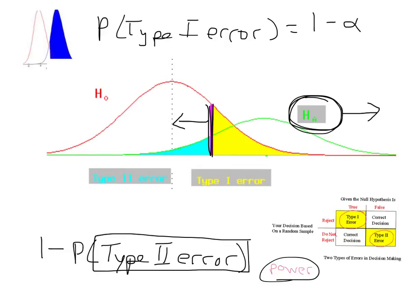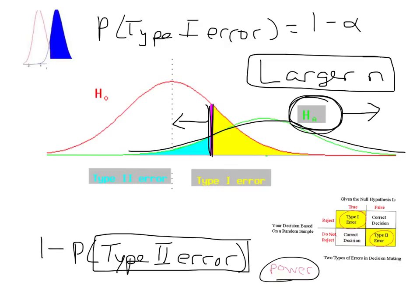Or a larger n which would then decrease the standard deviation making this graph taller. And then the probability of a type 1 error, excuse me, a type 2 error, if subtracted from 1 gives you the power of the test.